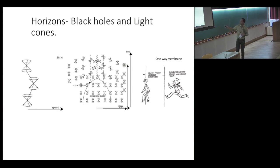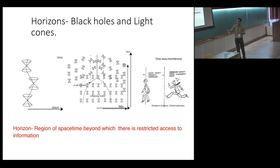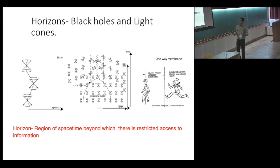A simplest caricature of what this horizon or one-way membrane is comes from C.V. Vishweshwara, about whom you may have heard. The idea is that if a light wave crosses by you, you cannot run and catch up with it because you cannot travel at the speed of light. So you can only cross it once. The key thing to take away is that the horizon is a region in space-time beyond which there is restricted access to information.